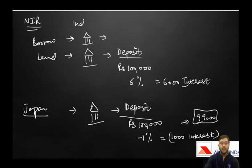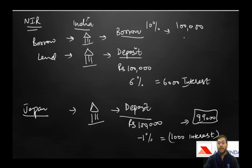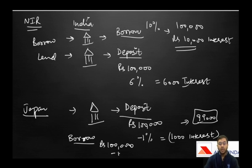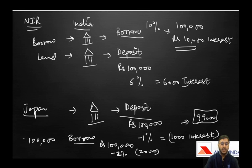In India, if you borrow one lakh rupees the bank charges 10% interest, so you pay 10,000 after one year. In Japan with a negative interest rate of minus 2%, the bank gives you 2,000 rupees as interest, so you only pay back 98,000. This incentivizes people to borrow and invest, while discouraging people from depositing in banks — that is where the problem lies.